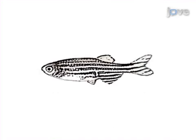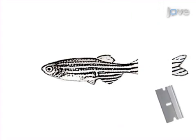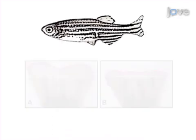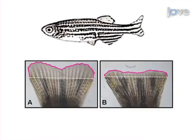Then the caudal fin is amputated and allowed to regenerate, to isolate genetically transmissible components of metabolic memory and to remove potentially complicating factors of the previous hyperglycemic environment. Finally, a fin regeneration assay is performed to document a persistent reduction in fin regeneration and identify induced changes in the transected tissue via an assay of interest.